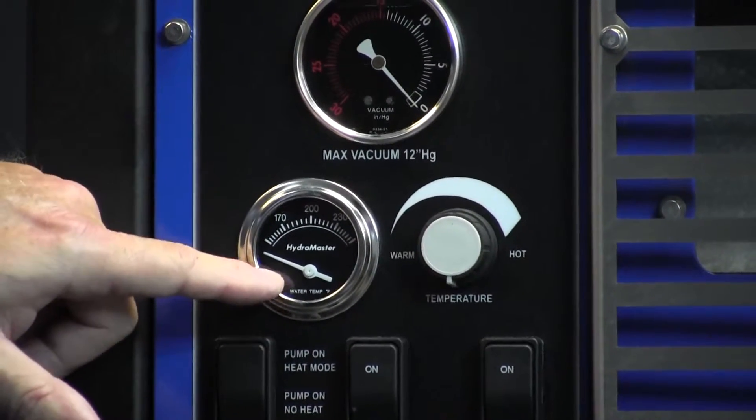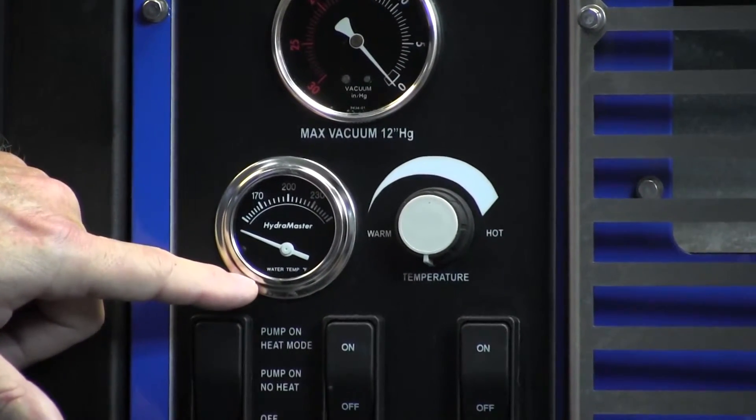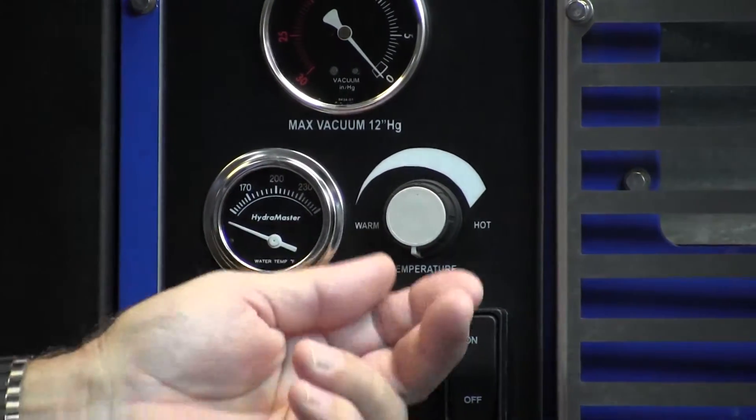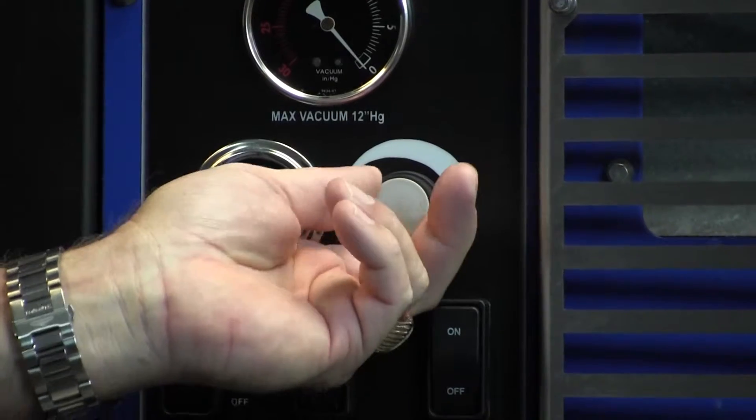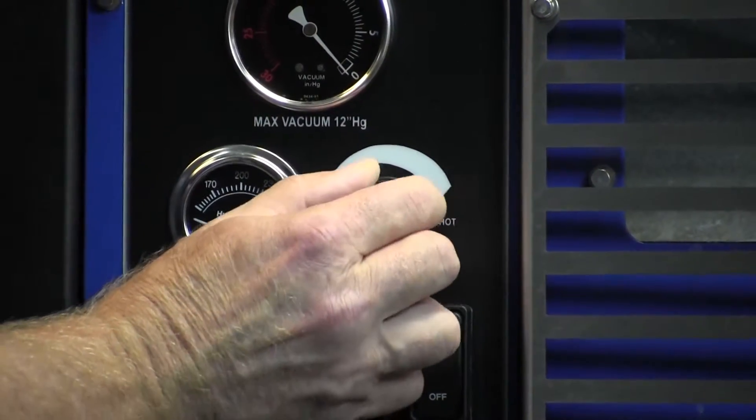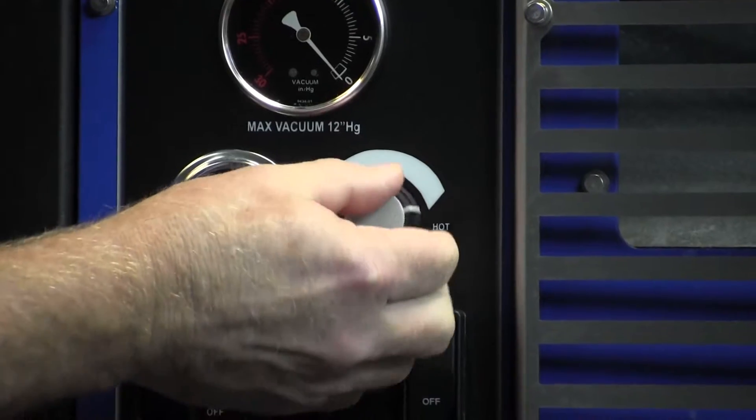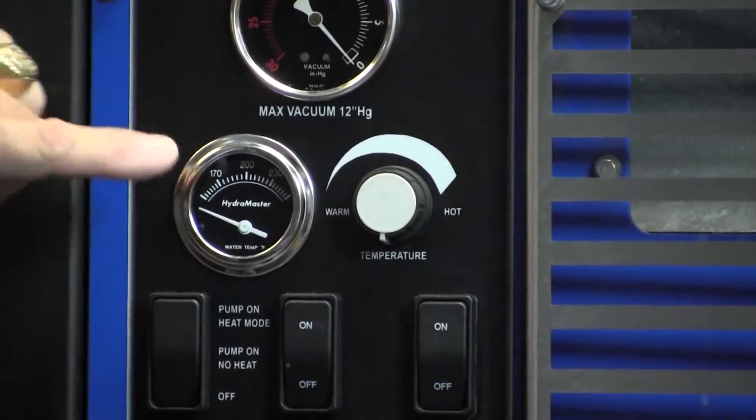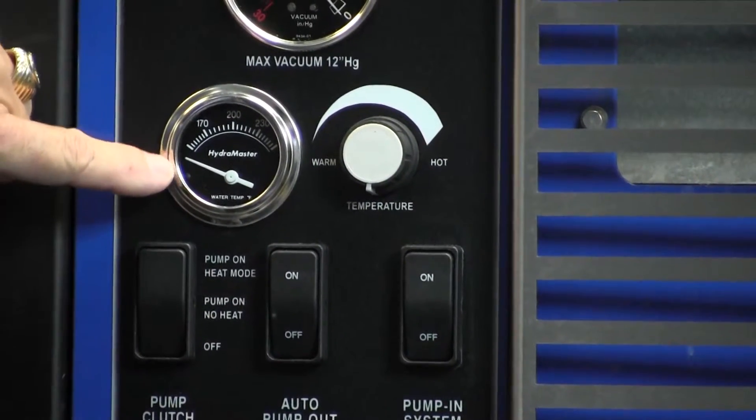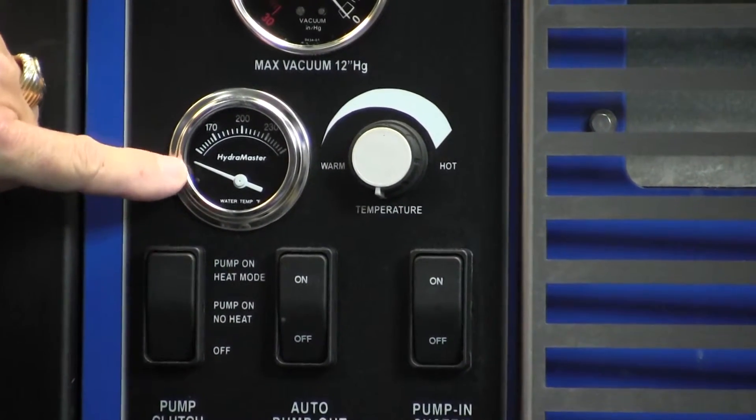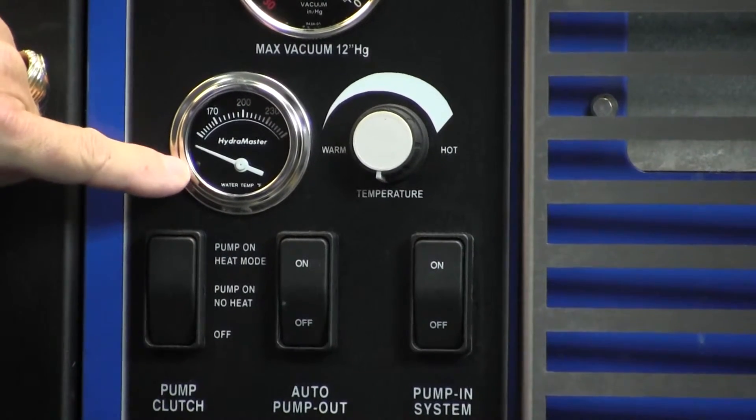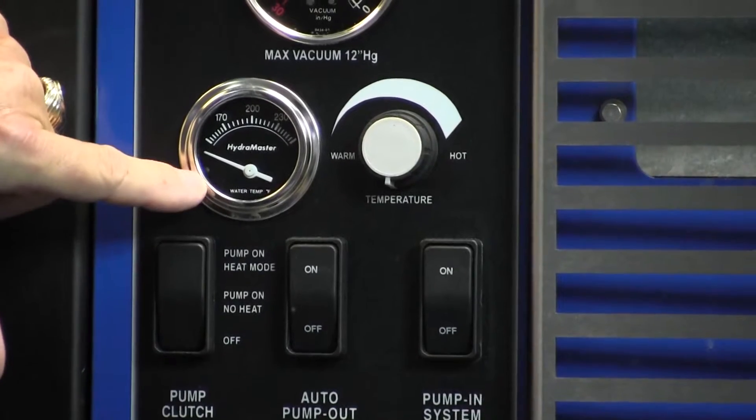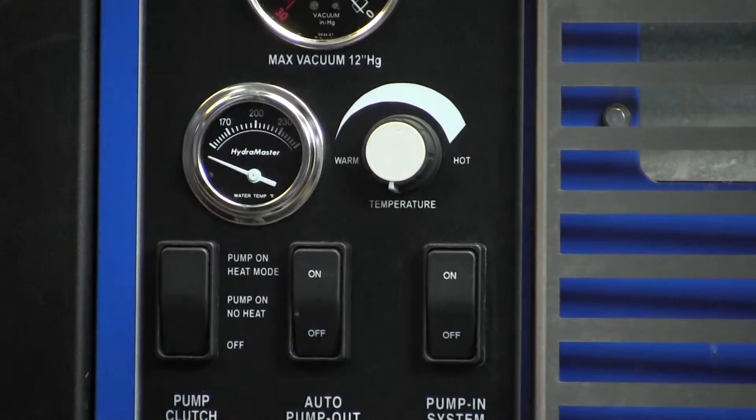Next is our temperature gauge, the water temperature gauge. It's affected by the dial we have here, from warm to hot. As you move that along, the gauge reads accordingly. Having control of that is critical. Whether we're doing hard surfaces, carpets, or fabrics, we can dial it down for fabrics and raise it up for hard surfaces.